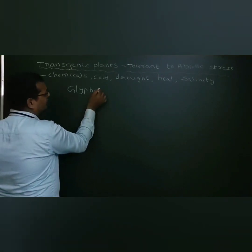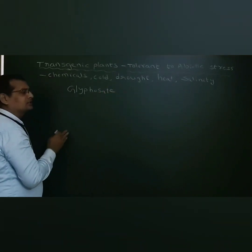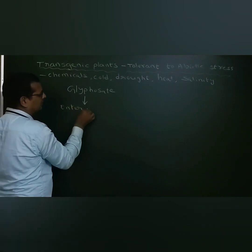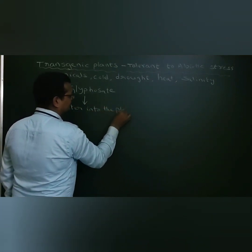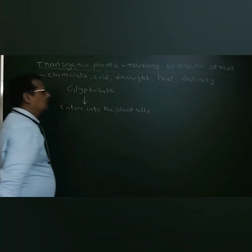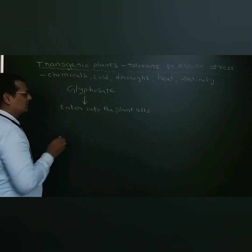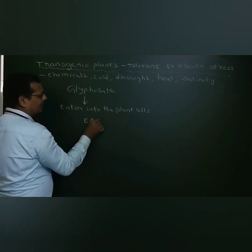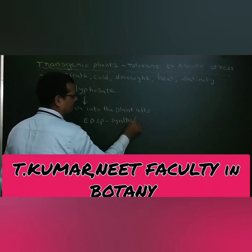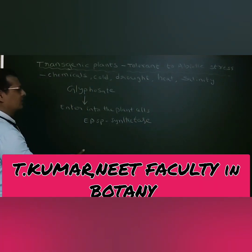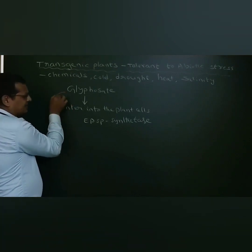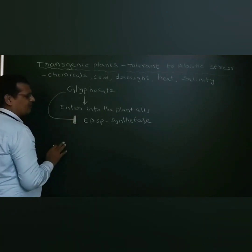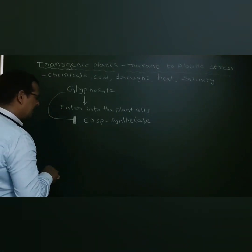When glyphosate enters into the plant cells, it inhibits the enzyme EPSP synthase. That is, glyphosate inhibits the synthesis of the enzyme EPSP synthase.